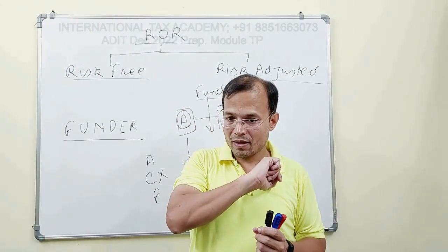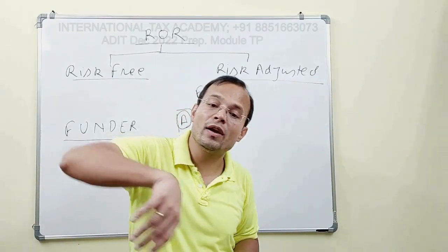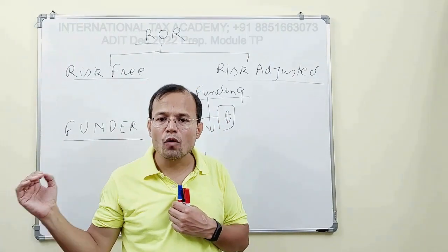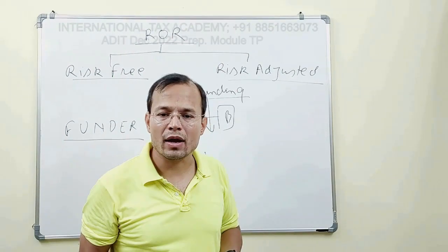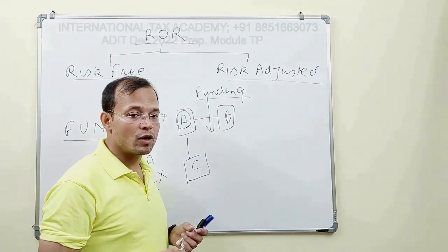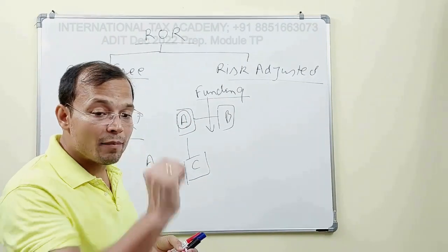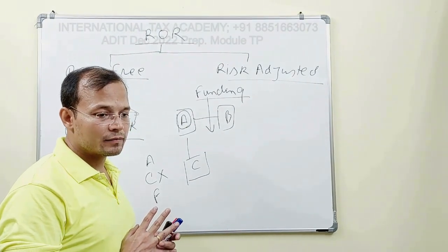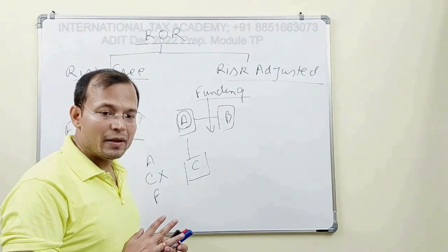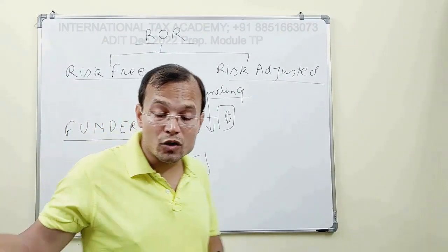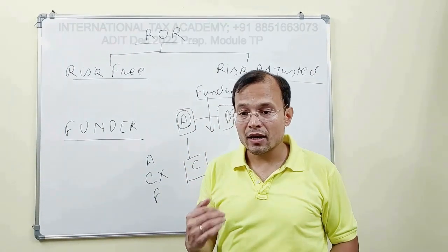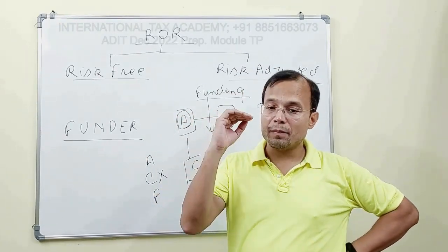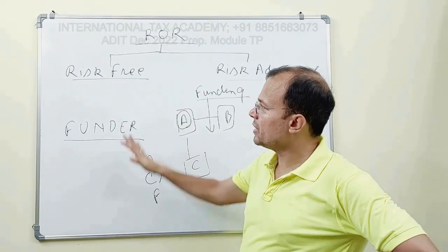Contrary to this, if Sri Lanka were to issue a sovereign bond, the rate of return would be higher than the US. The rate of return on Sri Lanka's bond will be higher because the risk of default for Sri Lanka is very high. Government securities — G-secs — are the best reference rates for determining the risk-free rate of return.